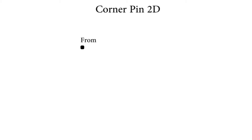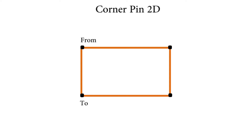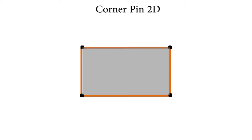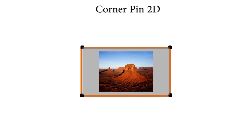Corner Pin 2D is designed to map the four corners of an image sequence to or from positions delivered from the tracking data. 'To' means the last tracking point. 'From' means the first tracking point. So, in simple words, in order to calculate the value in four corners and to insert a new image into it, we need Corner Pin 2D.